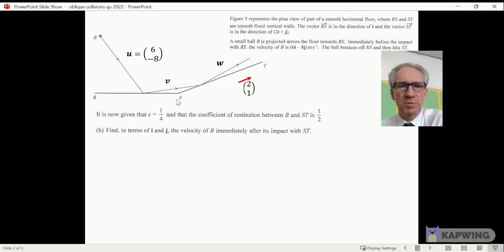The second part, we've got to find the vector w. We know that e is a quarter for RS and ST it's a half. That tells us what v is. The 6 will stay the same because that's the component parallel to the wall. The -8 will become 2 because it'll change direction, going up now rather than down, and a quarter of 8 to get 2.